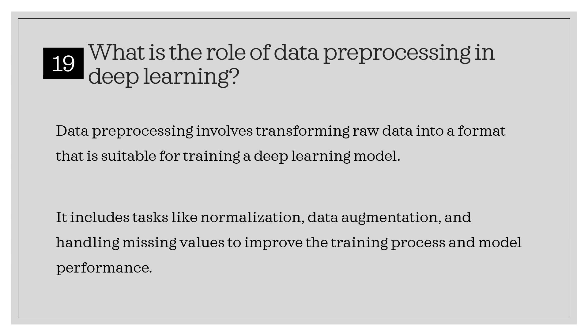What is the role of data pre-processing in deep learning? Data pre-processing involves transforming raw data into a format that is suitable for training a deep learning model. It includes tasks like normalization, data augmentation, and handling missing values to improve the training process and model performance.